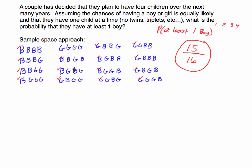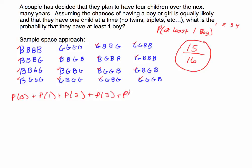The sample space approach can get the answer, but it's not efficient. What if the couple had eight children? You would not want to list out that sample space. So what formula can we develop? Notice that the probability of having zero boys, plus one boy, plus two boys, and so on — all of these together are certain, so they equal one. These are mutually exclusive events.